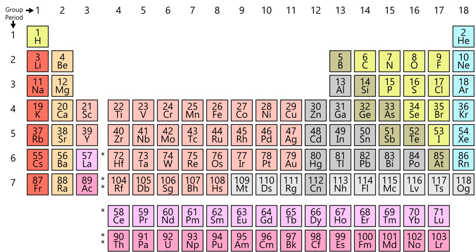A few authors position all 30 lanthanides and actinides in the two positions below yttrium, usually via footnote markers. This variant emphasizes similarities in the chemistry of the 15 lanthanide elements, possibly at the expense of ambiguity as to which elements occupy the two group 3 positions below yttrium, and a 15-column wide F-block — there can only be 14 elements in any row of the F-block.